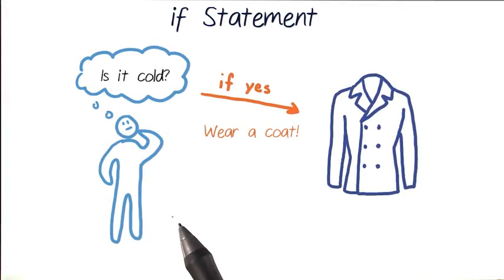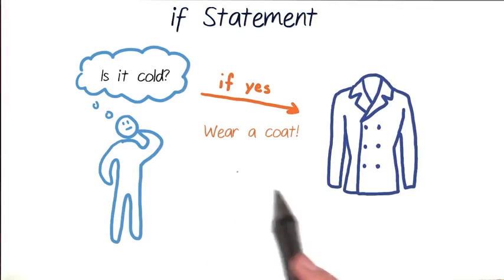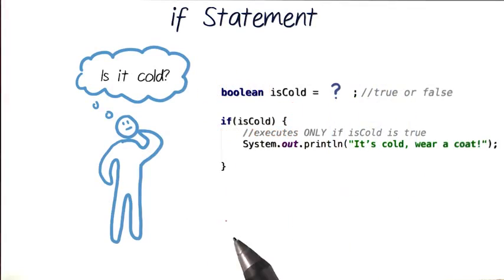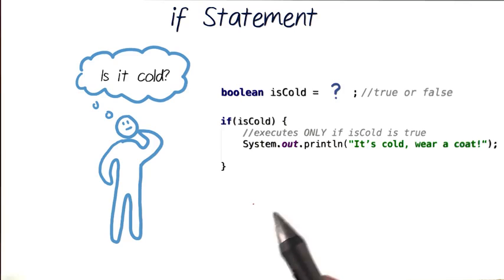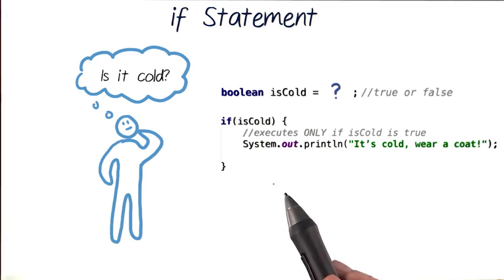Let's translate our decision about whether to wear a coat or not into Java code. To make a decision about wearing a coat, we just need to know if it's cold outside. And if it is, we'll wear a coat. The Java code for making a decision about wearing a coat is an if statement that looks like this.